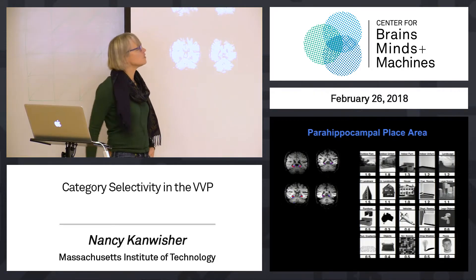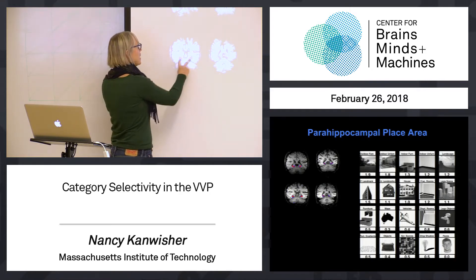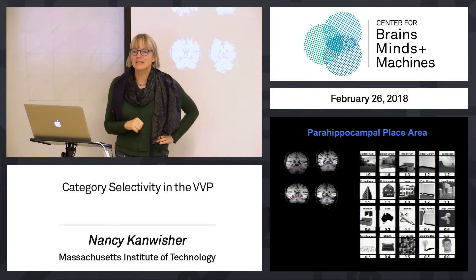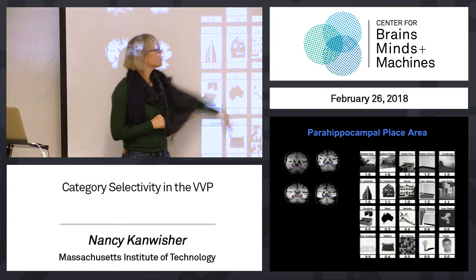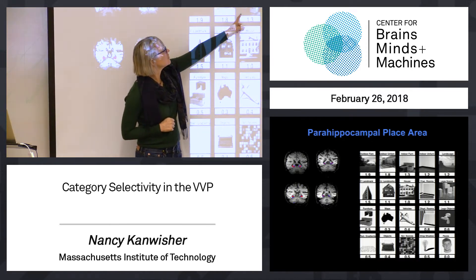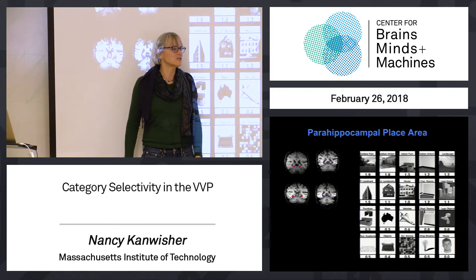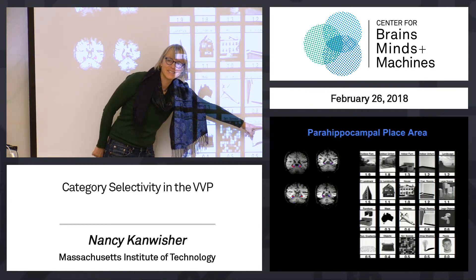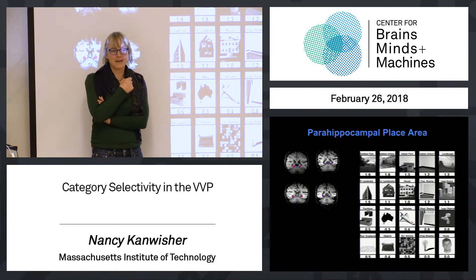This region here, called the parahippocampal place area — these are slices oriented through the brain — shows a region sitting deep in the middle of the brain on both sides. That region responds very selectively to images of places and scenes. It doesn't matter if it's Kresge Oval, someplace in Arizona, the inside of your living room, or even the inside of your living room with all of the furniture missing — just two walls and a floor. In all of those cases you get a strong response, and a much lower response to other things like faces, which get essentially a zero response — the same as staring at a dot, our baseline zero. We'll talk more about this region next week.